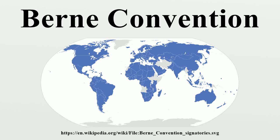Before the Berne Convention, national copyright laws usually only applied for works created within each country. So for example a work published in the United Kingdom by a British national would be covered by copyright there, but could be copied and sold by anyone in France. Dutch publisher Albertus Willem Sijthoff, who rose to prominence in the trade of translated books, wrote to Queen Wilhelmina of the Netherlands in 1899 in opposition to the convention over concerns that its international restrictions would stifle the Dutch print industry. The Berne Convention followed in the footsteps of the Paris Convention for the Protection of Industrial Property of 1883, which in the same way had created a framework for international integration of the other types of intellectual property — patents, trademarks and industrial designs.